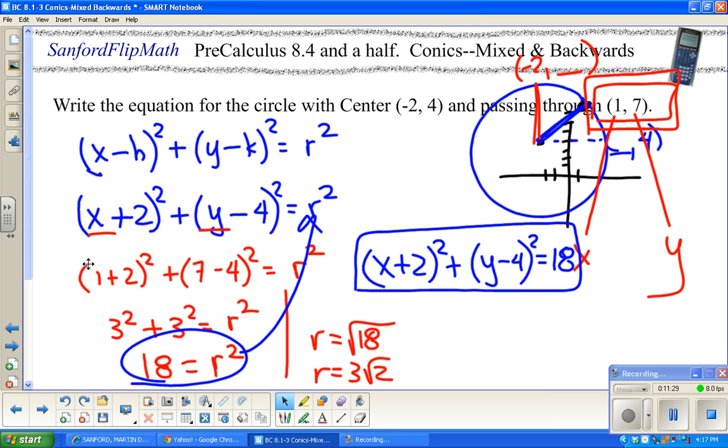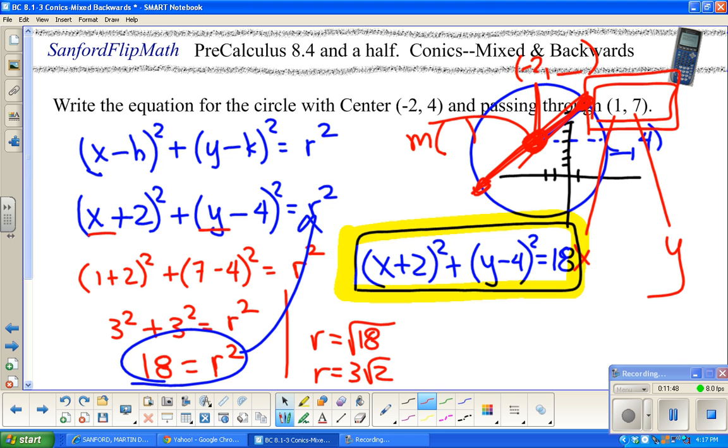So one more time: x plus 2 squared plus y minus 4 squared equals 18. And we're done. Let me just add a couple thoughts. Sometimes what they'll tell you instead is the endpoints of a diameter. If that happens, you're going to have to find the center, so you might have to find the midpoint of those two points where you're going to average the x's and average the y's. That's a circle.